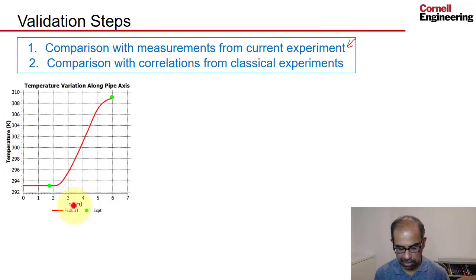So that shows the temperature variation along the pipe axis. So if this were a cross section through the pipe, so this is a wall, this is a wall, and that's my axis, that's looking at temperature variation along the axis.